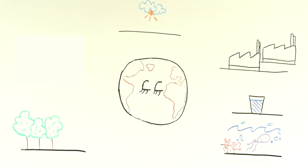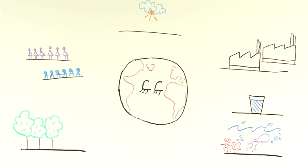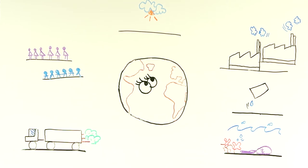There are more and more people on our planet. There is increasing pollution and fewer natural resources. Biodiversity is diminishing and the climate is becoming unstable.